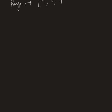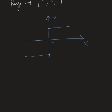Now we try to visualize this function. These are the two axes, and the function looks nearly like this. This is the origin, this is the point (0, 1) and this is the point (0, minus 1). This is the visual form of the signum function.